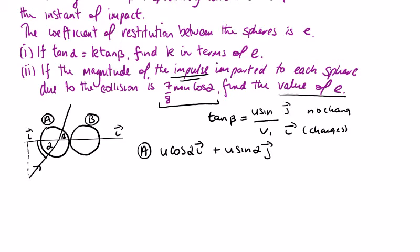That's my u sin alpha. B is at rest. Let's apply the principle of conservation of momentum to these two spheres: m1u1 plus m2u2 equals m1v1 plus m2v2.